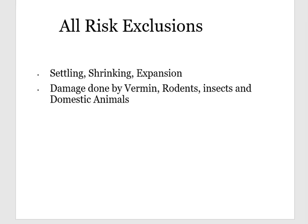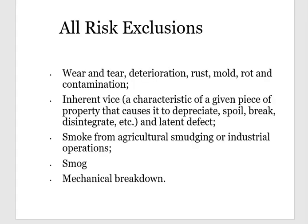Damage done by rodents, vermin, insects, and domestic animals would not be covered. If it's a wild animal, it would be covered, but domestic animals are excluded — and rodents, insects, and vermin are all excluded. So basically, on an all risk policy such as a DP3, where all risks are covered under Coverages A and B, everything is covered except your all risk exclusions.